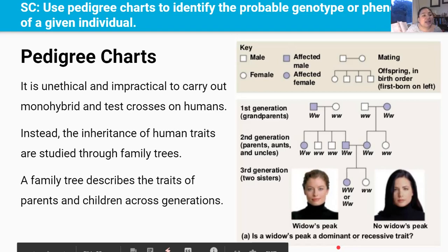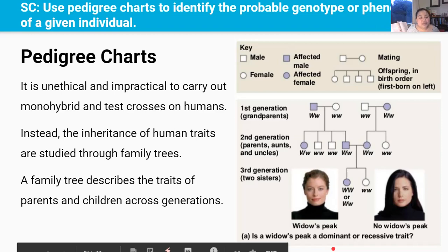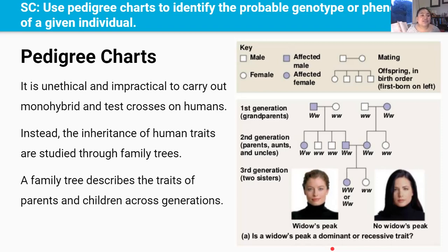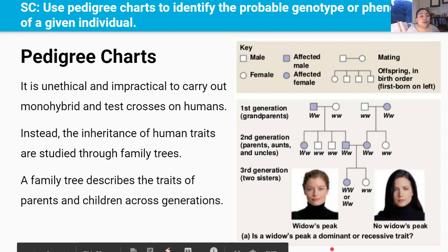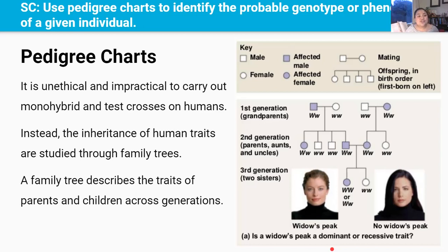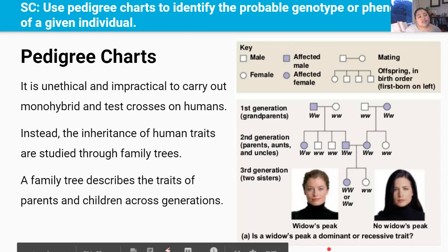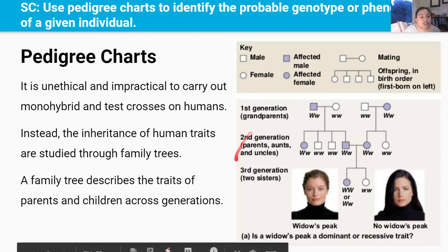It's absolutely unethical and impractical to carry out monohybrid or test crosses on people — it's unethical to ask pairs of humans to breed so that phenotypes of their offspring could be analysed, and humans produce a low number of offspring compared with common lab organisms. So instead, geneticists analyse the results of matings that have already occurred by collecting information about a family's history for a particular trait and assembling it into a family tree — a diagram called a pedigree chart.